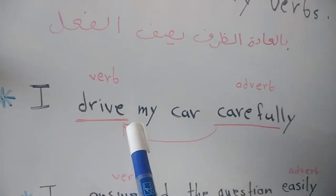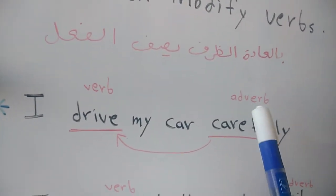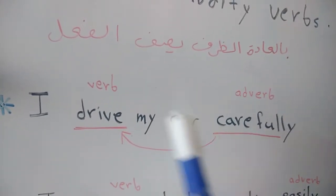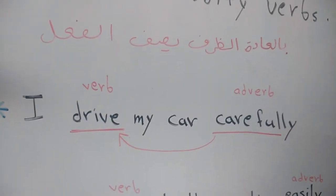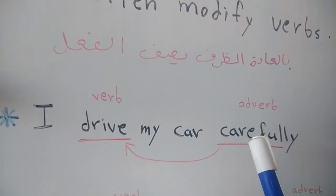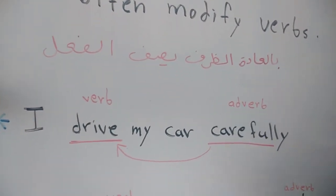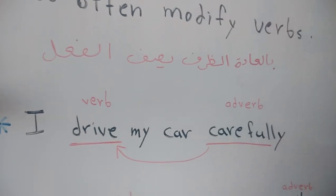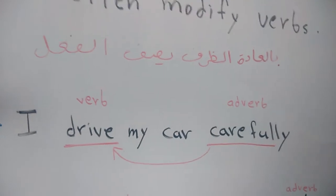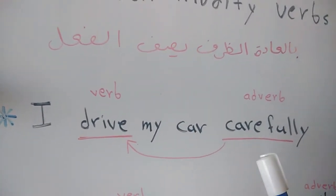كلمة carefully مين وصفت؟ وصفت الـ verb — drive. هاد الشي اللي بدنا نعرفه: الـ adverb هون وصف الـ verb. كلمة 'بحذر' — مين وصفت؟ ما وصفت I ولا السيارة، وصفت القيادة نفسها — وصفت الفعل. أنا أقود كيف؟ بقود carefully، بحذر.